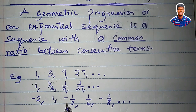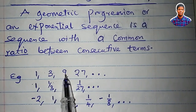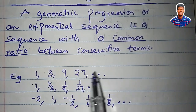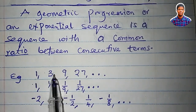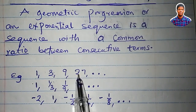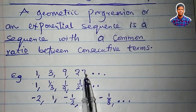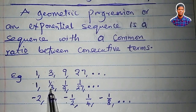How do we calculate the common ratio? The common ratio is the second term divided by the first term, the third term divided by the second term, the fourth term divided by the third term, and so on. That means after 27, the next term is 81, because 81 divided by 27 gives 3, and 3 is the common ratio.